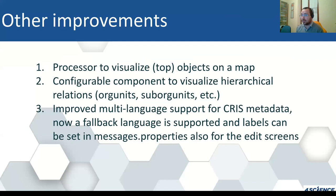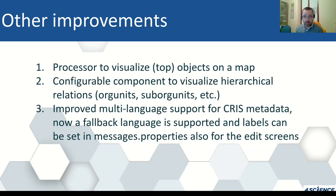We have a lot of additional improvements to mention. There is a new processor that allows you to visualize objects on Google Maps. You can configure a component to visualize hierarchical relations, typically useful for organization units, so you can visualize the structure of your university for instance. We have also improved multi-language support for CRIS metadata, so that in a CRIS object like a project, you can have the title in both German and English — the same for the abstract. When the user is on the German interface they will see the German value, and if the German version is missing, they will fall back to the English version or vice versa.